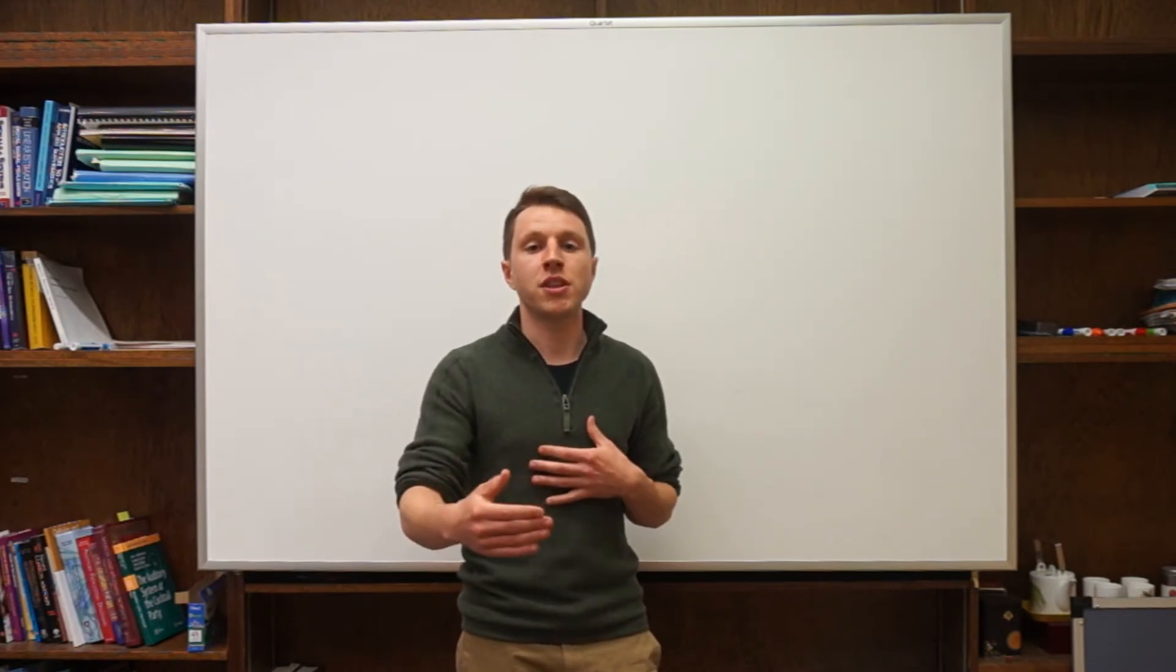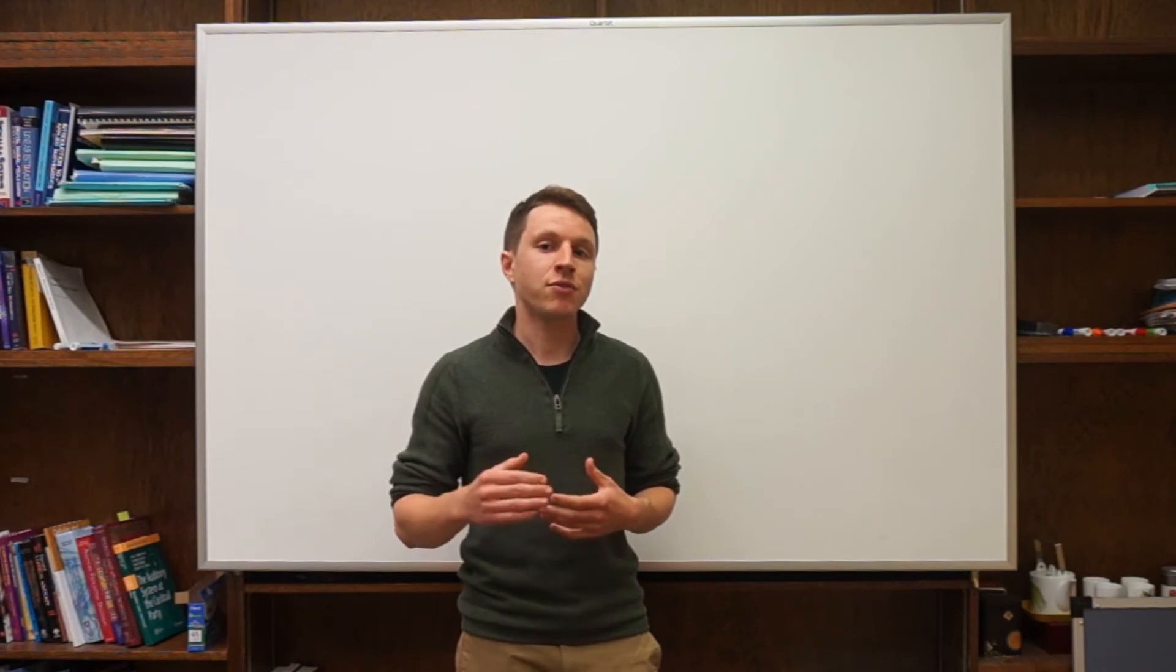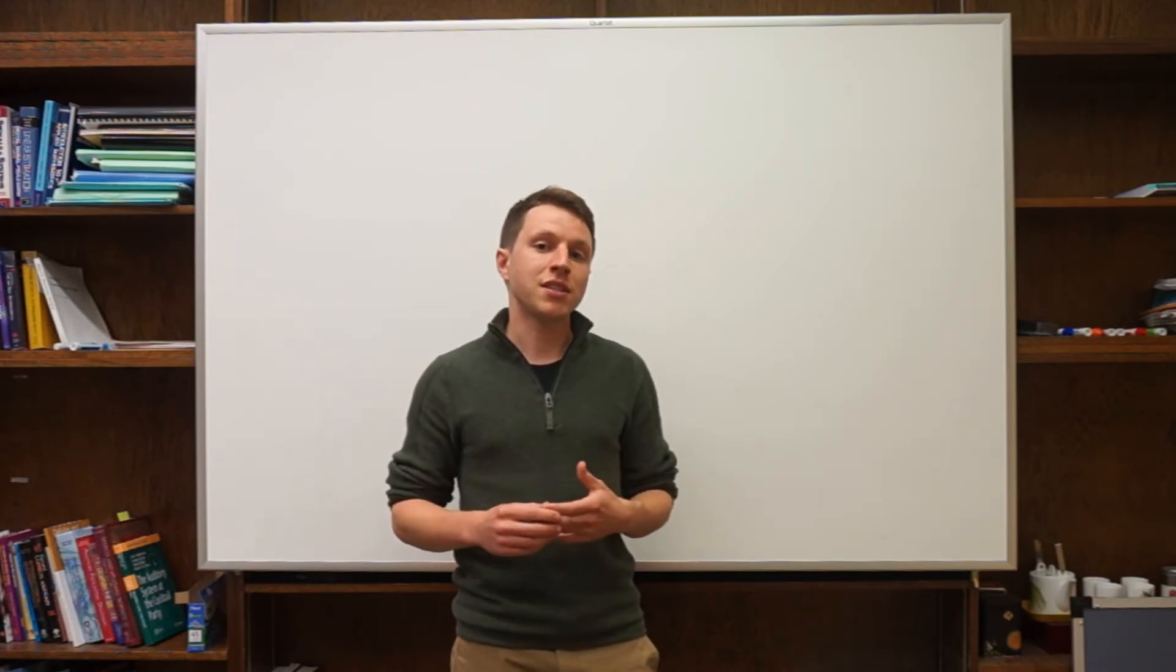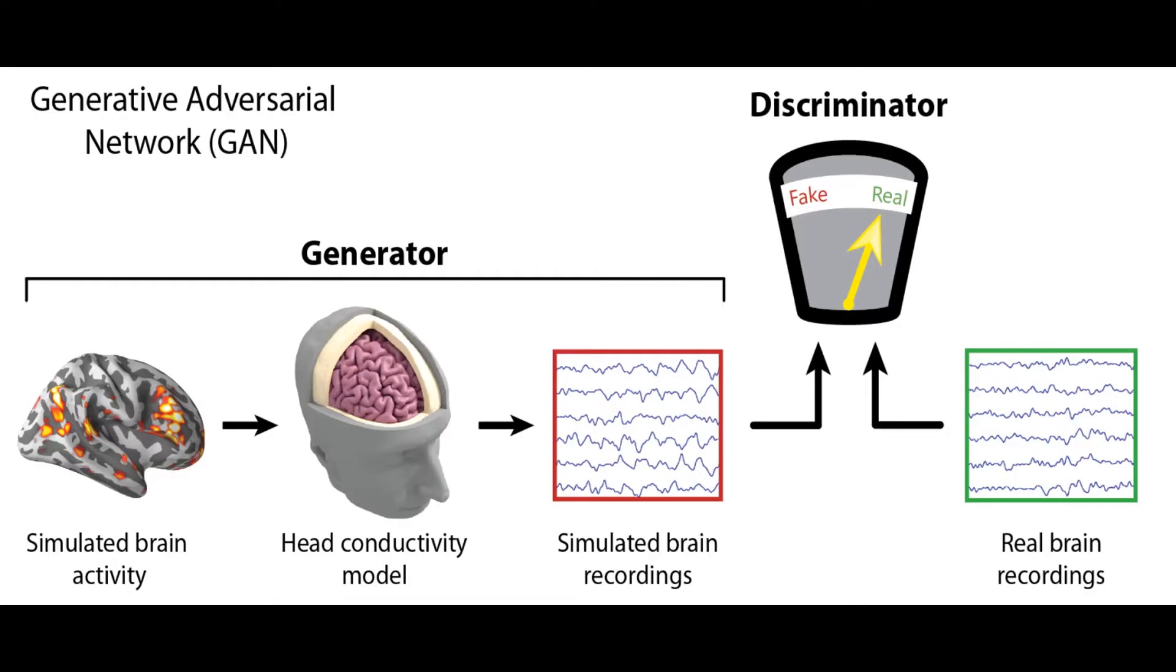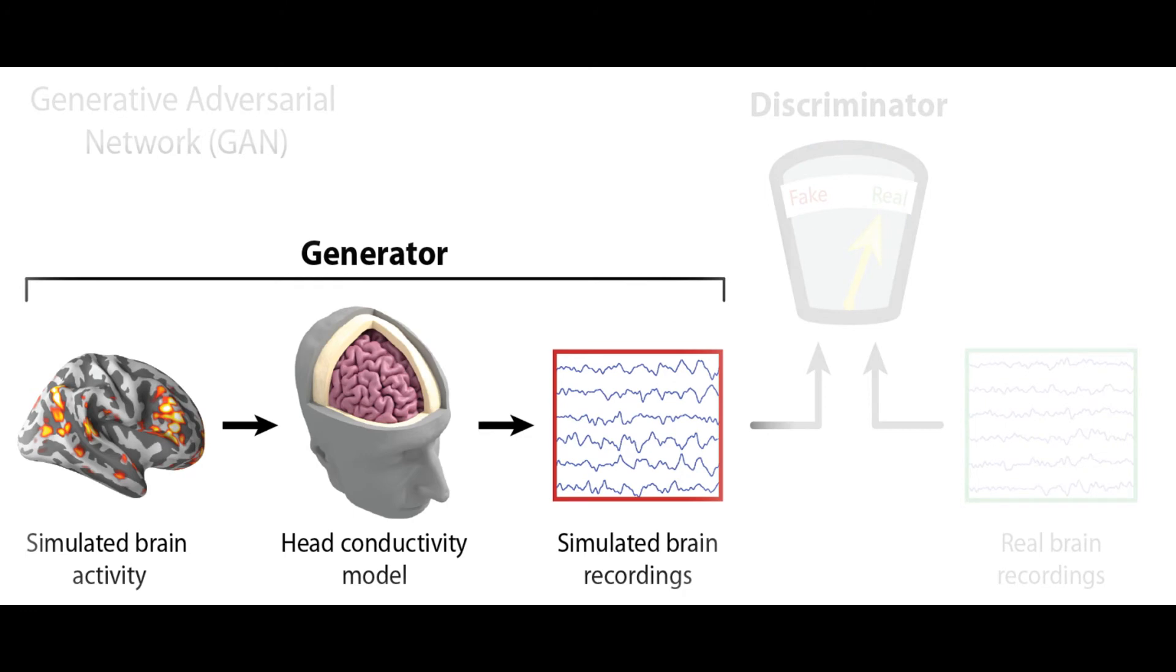So we propose to bridge this gap with generative adversarial networks, or GANs. And GANs are a deep learning framework that consists of two components competing against each other. In our case, it will consist of a cortical model and a head model that will be used to create synthetic brain recordings.